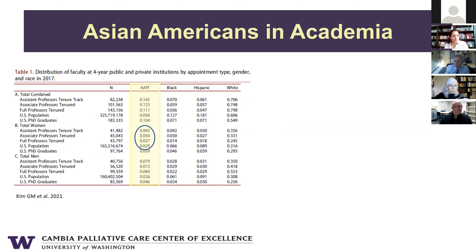We see similar patterns when we look at academia. This table shows the proportion of faculty members at four-year public and private institutions. The AAPI cohort is shown in yellow. I've circled the data for female faculty, highlighting the intersection of race and gender. As you go up in rank, the proportion really drops — while Asian American women make up 2.9% of the U.S. population, they only make up 2.7% of tenured full professors.